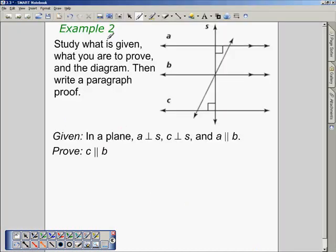Study what is given, what you are to prove, and the diagram. Then write a paragraph proof. On this example, we're told that in a plane, A is perpendicular to S, C is perpendicular to S, and A is parallel to B. What we need to prove is that C is parallel to B. And we're going to use the theorems from this lesson to do that.